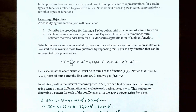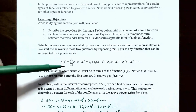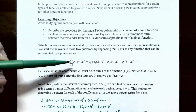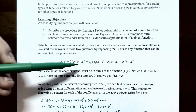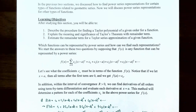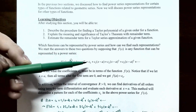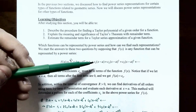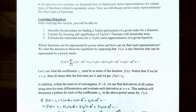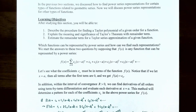Which functions can be represented by power series and how can we find those representations? We'll start by supposing that f(x) is any function that can be represented as a power series: f(x) equals the sum from n=0 to infinity of c_n times (x minus a) to the n. The coefficients c_n are times (x minus a) to the n exponent, and we can write this as an infinite polynomial: c_0 plus c_1(x-a) plus c_2(x-a)² plus c_3(x-a)³ and so on.